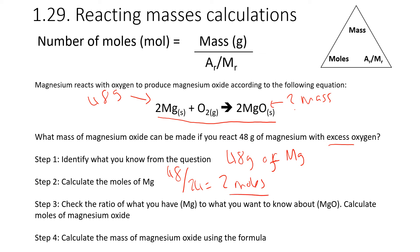Then we would check the ratio for step three. Check the ratio of what you have to what you want to know about. What we want to know about is the magnesium oxide. We're looking at the ratio between magnesium and magnesium oxide. The way we get that is by looking at the big numbers in front of those species. In front of magnesium, we have a two. In front of magnesium oxide, you also have a two, which is the same as one to one. This means that the number of moles of magnesium that react are the same number of moles of magnesium oxide that will be produced. Since we now know the moles of magnesium oxide, we can calculate the mass. Mass equals moles multiplied by MR. It's two moles, and the MR of magnesium oxide is 24 plus 16, which is 40. So we produce 80 grams of magnesium oxide.